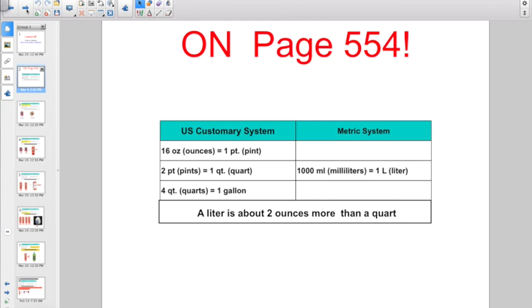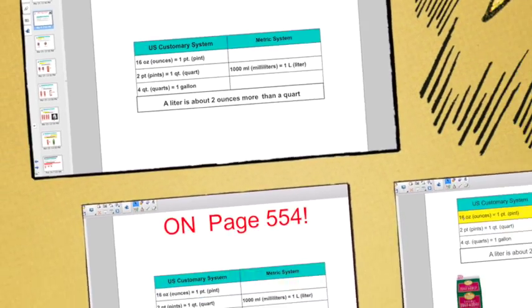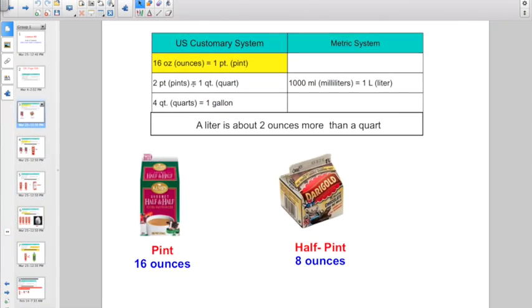But let's try to help you do some visualizing here. So the first one, 16 ounces in a pint. The half pint is what we drink every day for lunch and breakfast, right? So a half pint would have eight ounces. So a whole pint would have 16 ounces.